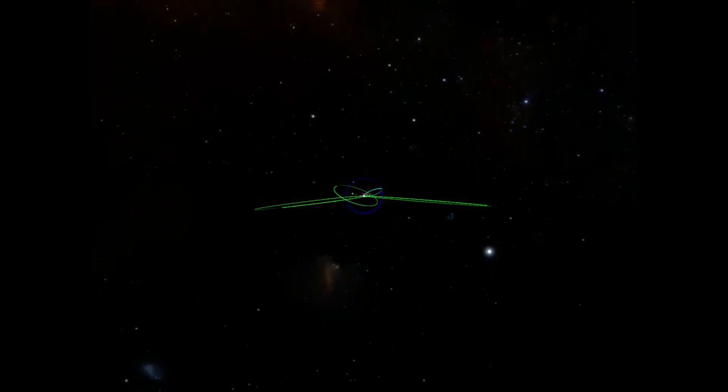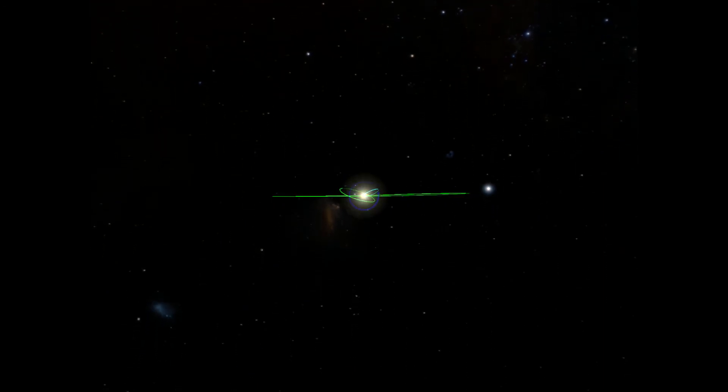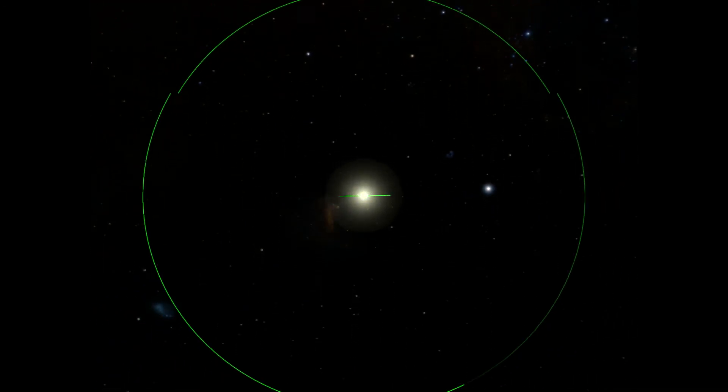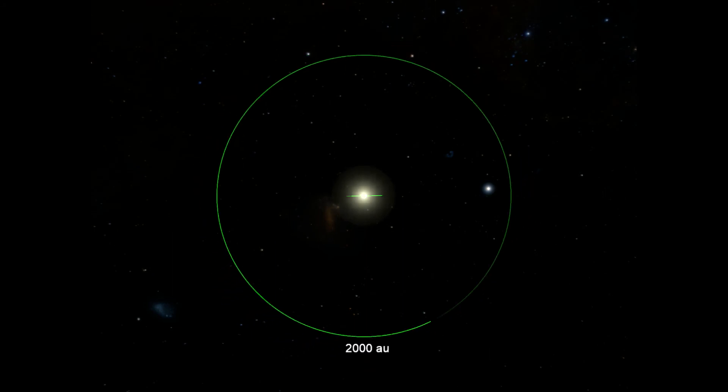The Oort Cloud is a theoretical cloud of objects surrounding the solar system, many times larger than the Kuiper Belt. The Oort Cloud is thought to begin between 2,000 and 5,000 AU and extend thousands of AU outward. However, no object has been directly observed in the distant Oort Cloud, leaving it a theoretical concept for the time being.